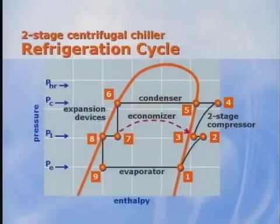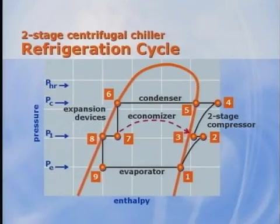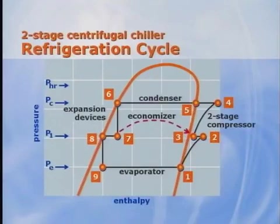The pressure-enthalpy chart for a two-stage centrifugal chiller is similar to a positive displacement machine except for a few additional points created by the flash economizer. Heat of compression is reduced from points 2 to 3 due to the refrigerant gas introduced by the flash economizer, while points 7 and 8 show the liquid-vapor separation in the economizer caused by the first expansion device. One other difference is a lack of subcooling at 0.6 due to the cycle process.